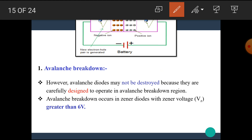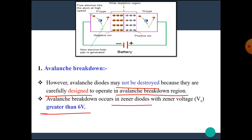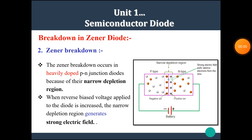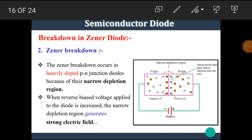In this process, a large number of electrons and holes flow in the circuit, causing a large current that breaks the junction. In a normal PN junction diode, when this type of breakdown occurs, the diode gets permanently damaged. However, avalanche-rated Zener diodes may not be destroyed because they are carefully designed to operate in the avalanche breakdown region. Avalanche breakdown occurs in Zener diodes with Zener voltage greater than 6V.